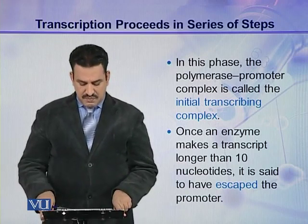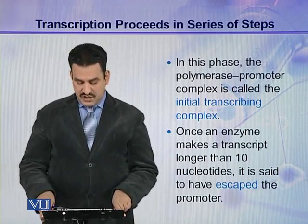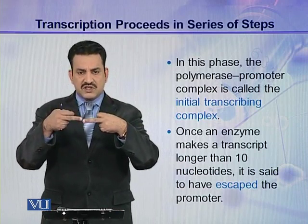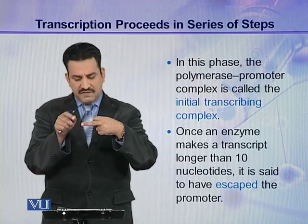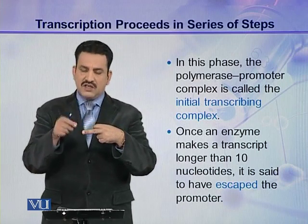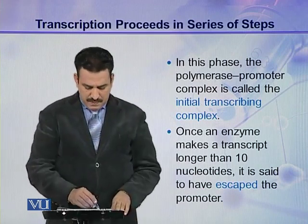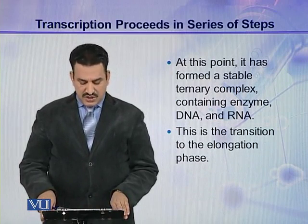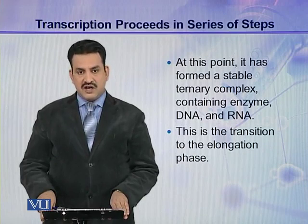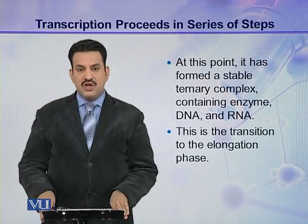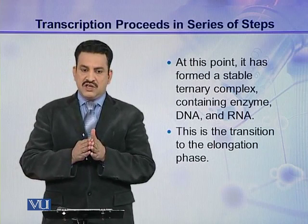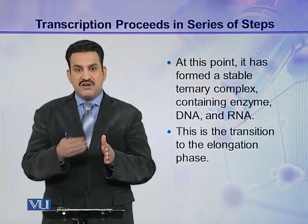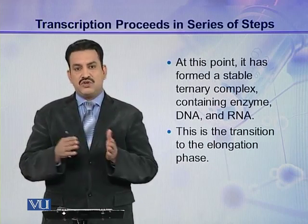Once the enzyme makes a transcript longer than 10 nucleotides, it is said to have escaped the promoter — the first 10 bases on the template strand are considered the promoter region. At this point, the enzyme forms a stable ternary complex consisting of the enzyme, DNA, and RNA. The formation of this ternary complex marks the end of the initiation phase and the transition into the elongation phase.